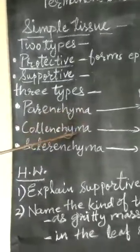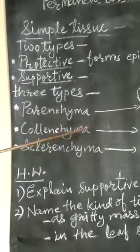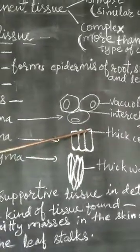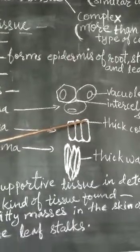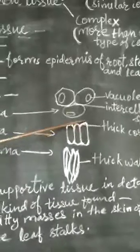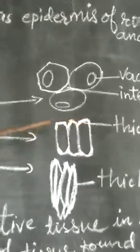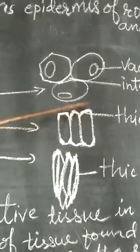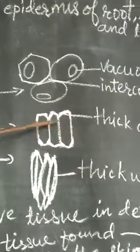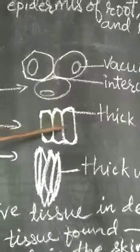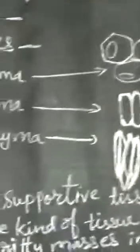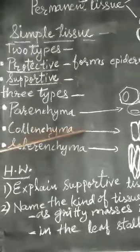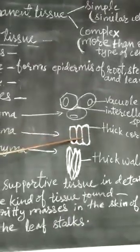Next is collenchyma. The cells found in collenchyma are elongated and corners are thick because of the deposition of cellulose and pectin. Its main function is to provide support and strength to the plant. This collenchyma can be found in the petiole of leaf and below the epidermis of stem.